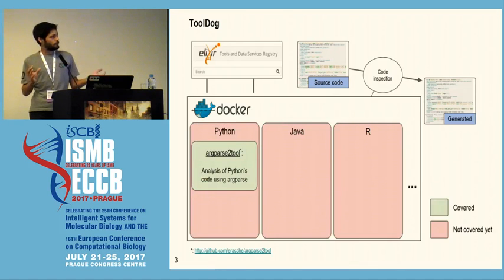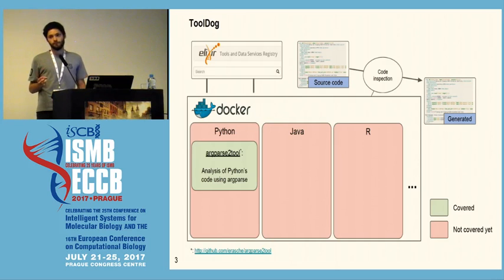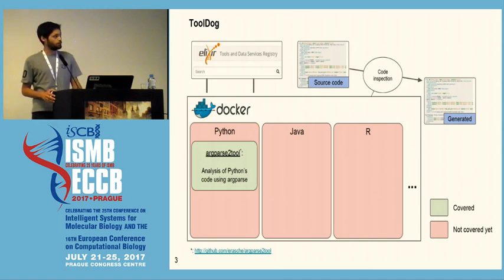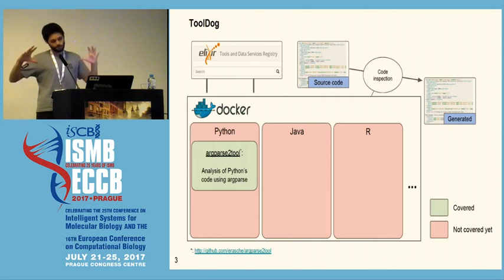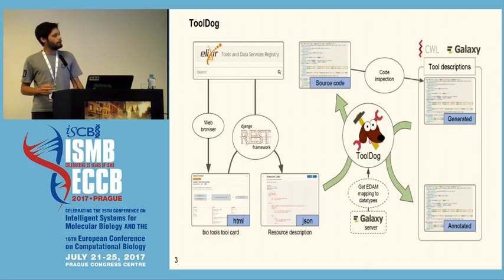The first main step of Tool Dog is to inspect the source code. This is done within a Docker container, and it currently only supports Python tools using argparse — thanks to work done by Eric Rasche and Anton Korobeynikov. This generates the first template of your tool description. The second step is to add all the metadata — EDAM, citations, and so on — to the description.